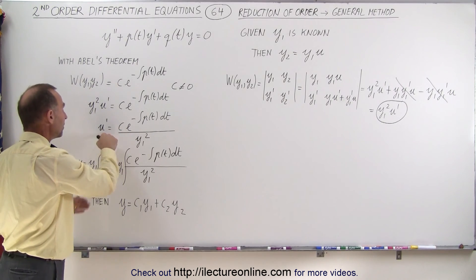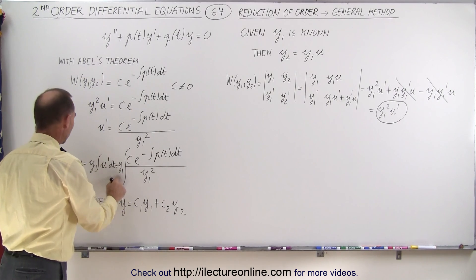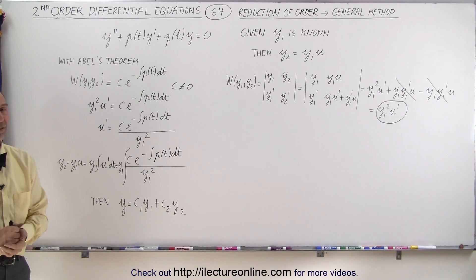where y2 can be calculated doing this. So we take the integral of u prime times y1 will give us y2, and that's how it's done.